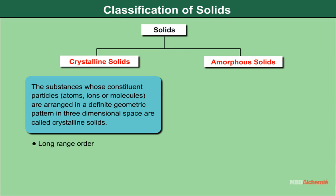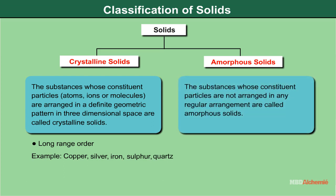In other words, crystalline substances are said to have long-range order. Examples include copper, silver, iron, sulfur, and quartz. Amorphous solids are substances whose constituent particles are not arranged in any regular arrangement. The amorphous solids have a random, disordered arrangement of constituents.